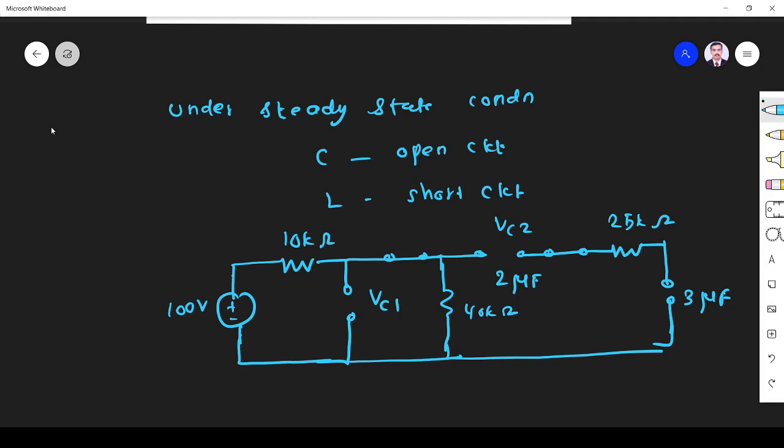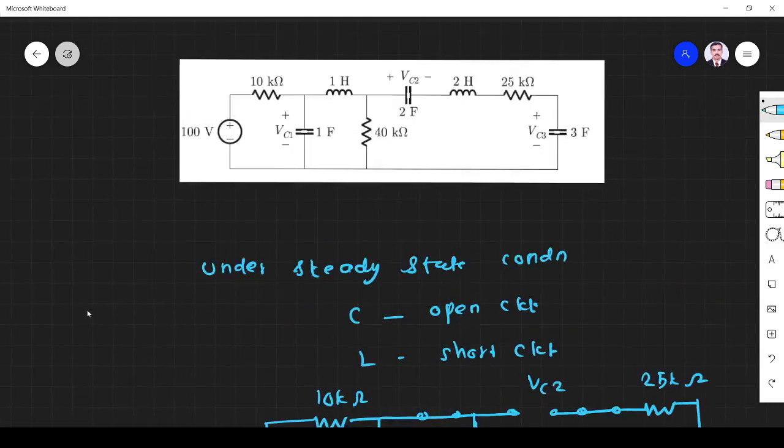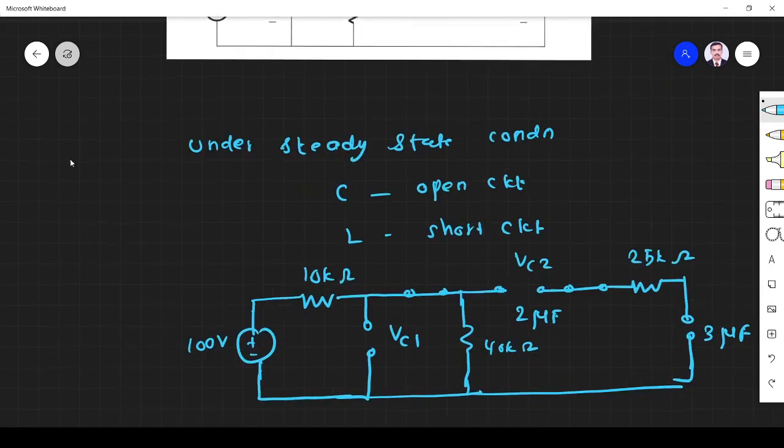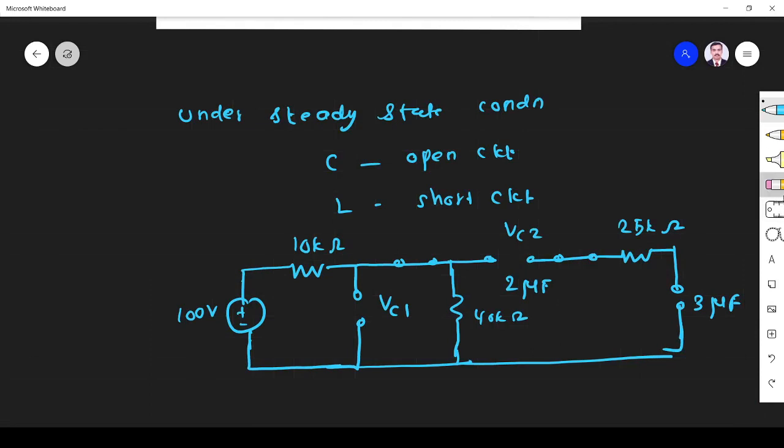Here VC1, VC1 is 1 farad. Everything is in farad, so it is simply farad. It is 2 farad, it is 3 farad, it is 3 farad, it is 1 farad.